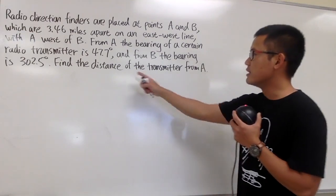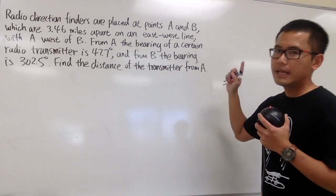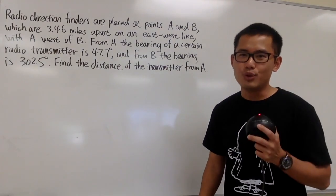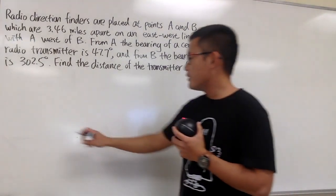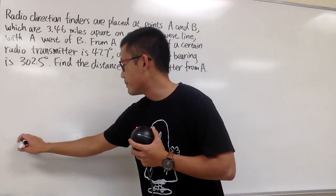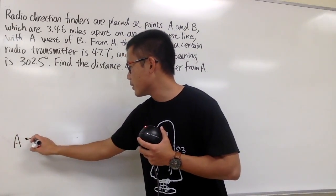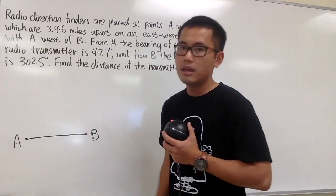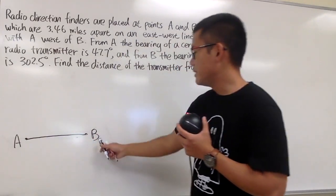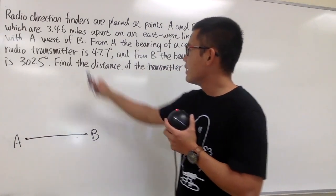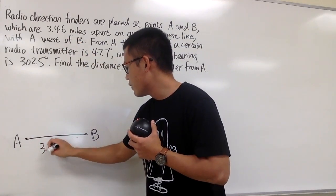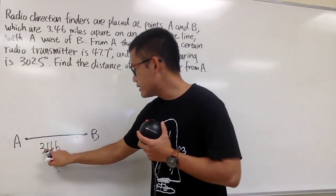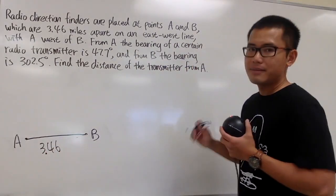We are going to find the distance of the transmitter from A. For all these kinds of questions, we definitely have to draw a picture first. So this is my point A, and I'll draw a horizontal line. Right here is my point B. A is on the west, B is on the east, and they are 3.46 miles apart. Let me write this down without the units — we'll put units on at the end.